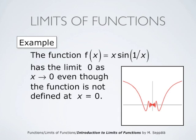As an example, consider the function f of x equals x times sine one over x. This function is undefined when x equals zero, otherwise it is defined by this expression. And it clearly has the limit zero as x approaches zero, even though the function is not defined at x equals zero. The graph shows us that the values approach zero, and this can be easily established precisely mathematically by estimating the values of x sine one over x.